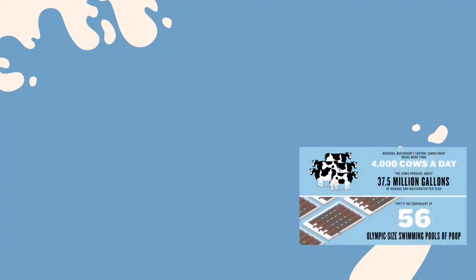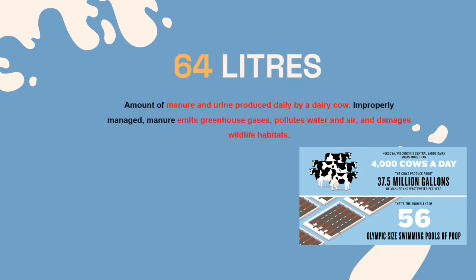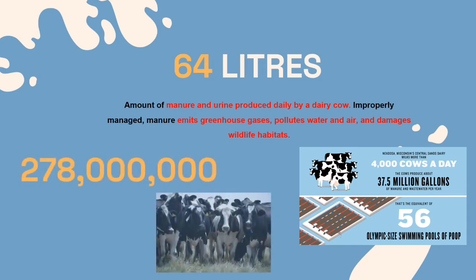A dairy cow produces a total of 17 gallons of manure and urine daily. Improperly managed, manure emits greenhouse gases, pollutes water and air, and damages wildlife habitats. Properly managed, it can fertilize crops and produce energy. In estimate, there are 278 million total dairy cows in the world.